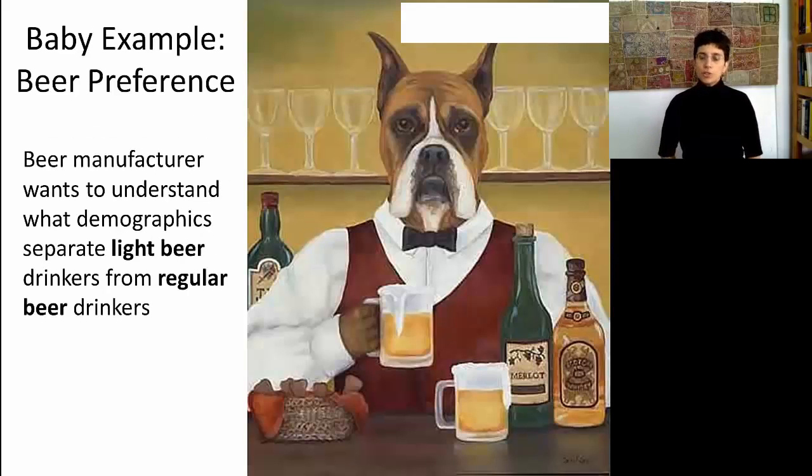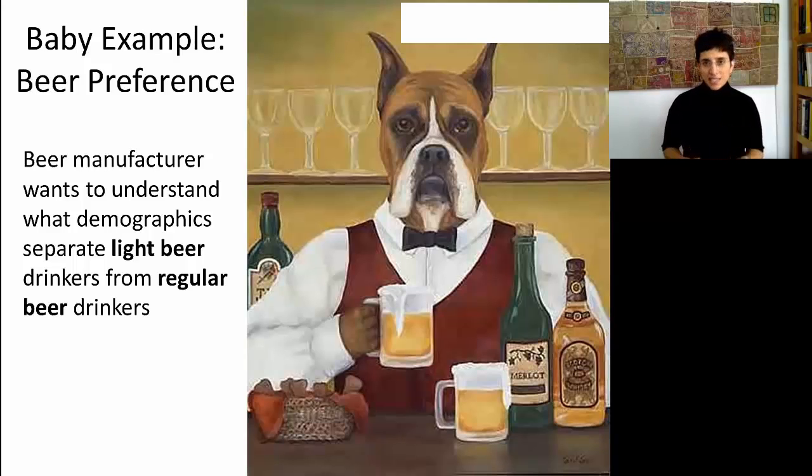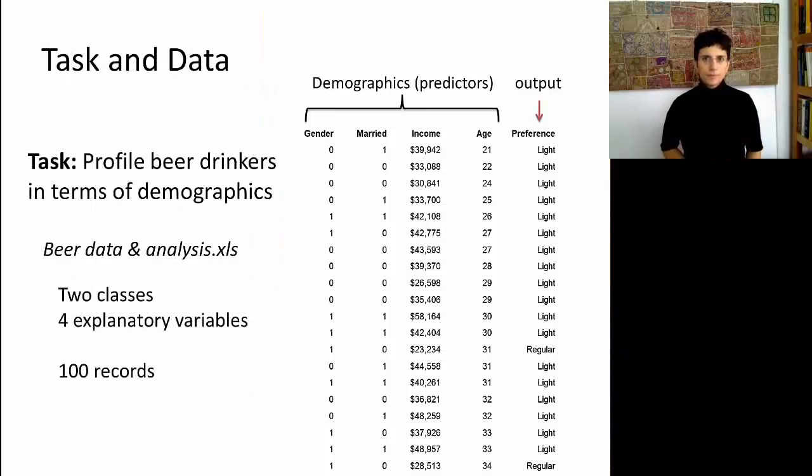We're going to use the same beer preference example, where we had the online bartender. The idea is to try and use demographics on customers in order to classify their preference of either light beer or regular beer. The data that we have includes four predictors. Some of them are numerical, and some are categorical, and our output is a two-class variable called preference. We have 100 records, and the data are available in the Excel sheet.